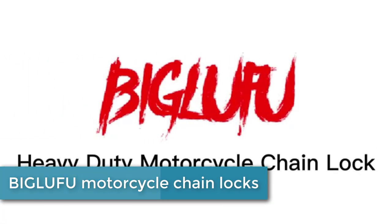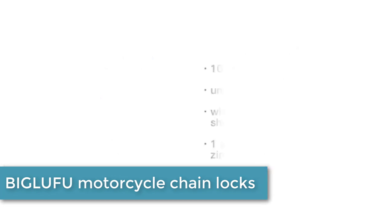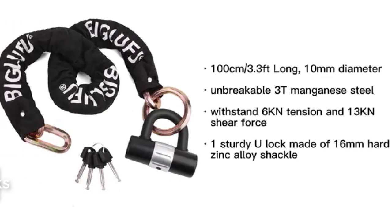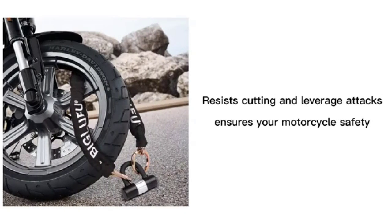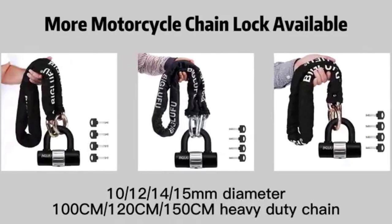Starting off our list at number 5, the BIGLUFU Motorcycle Chain Lock. This heavy-duty lock features a 10mm thick chain made of high-quality manganese steel, making it tough and durable enough to resist cutting and sawing attempts. The lock also comes with a heavy-duty steel padlock with a double locking mechanism for added security. Plus, the chain's protective nylon cover prevents scratches to your bike's paint. This lock is weather-resistant and easy to use, making it a great option for anyone looking to secure their motorcycle while parked or stored.